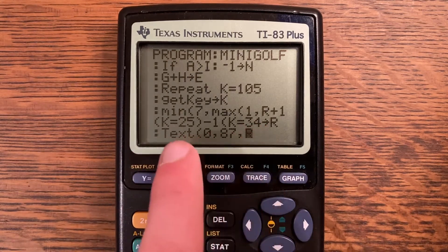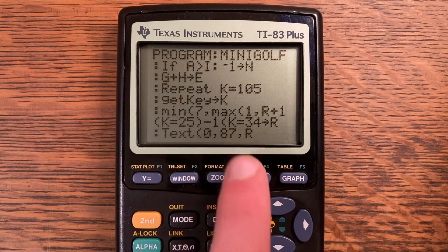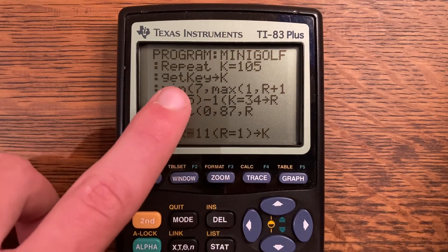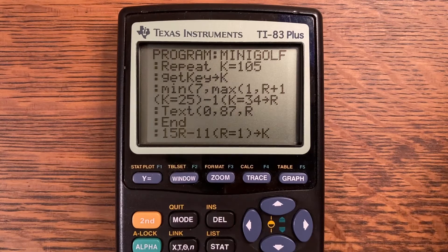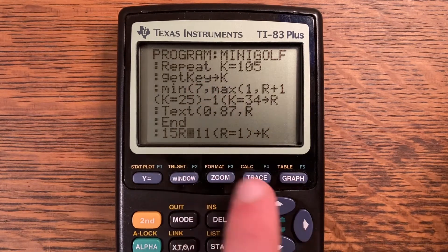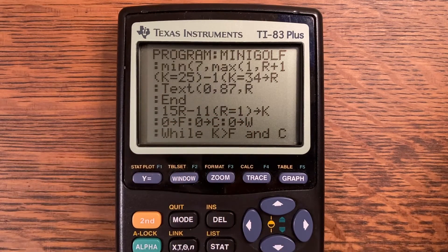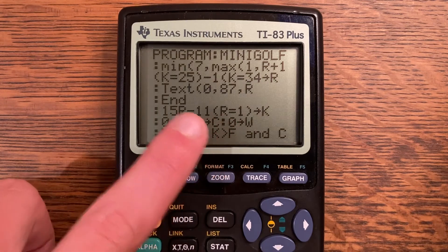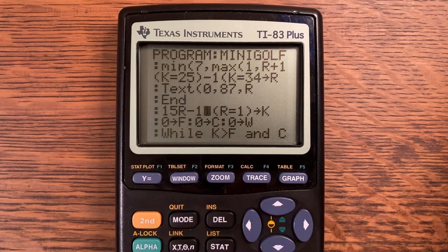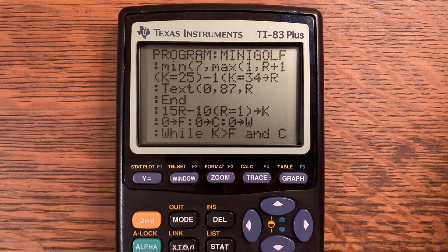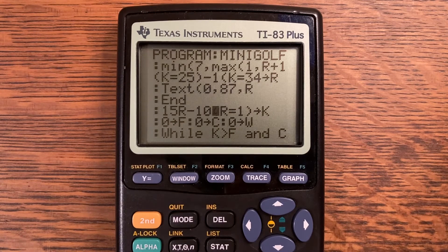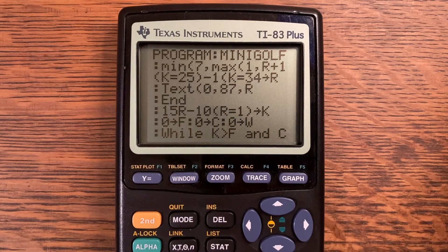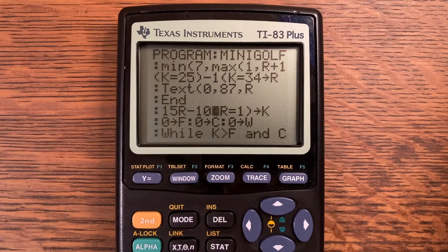G plus H store into E. Repeat until K is equal to 105. Get key store into K. Min of 7 and max of 1, R plus 1 if K is equal to 25 if you hit the up arrow, minus 1 if K is equal to 34 if you hit the down arrow store into R. Text at 0 comma 87 comma R. So this is the select part where up in the corner it says power and then you get to select whatever you need to. And then this is the actual distance that your shot will travel: 15R minus 11 multiplied by the fact that R is equal to 1. So if R is equal to 1, your shot will only travel 4 spaces. You can adjust that. I wanted to give an option that would go a very short distance no matter where you were, and then all the other ones will add 15 on to whatever it is.